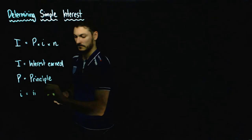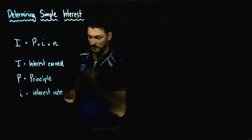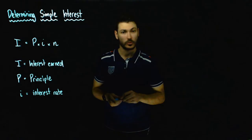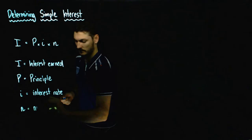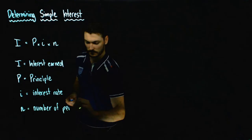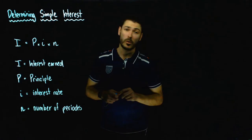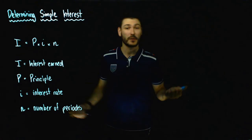Little i is your interest rate. And last of all, we have N, the number of periods — which is essentially how often you're going to be determining this interest, over what time period. This N is normally in years.